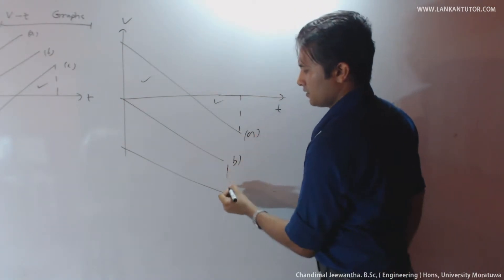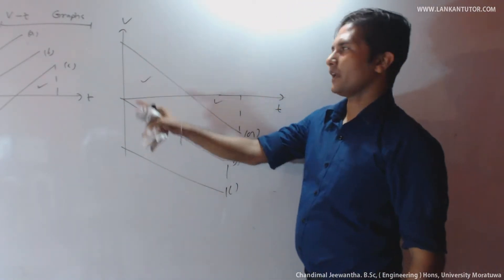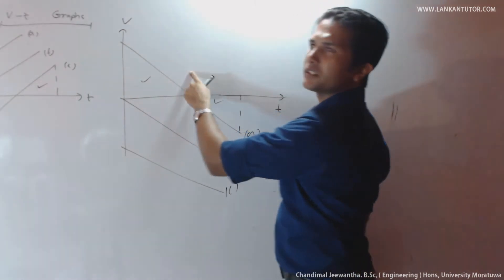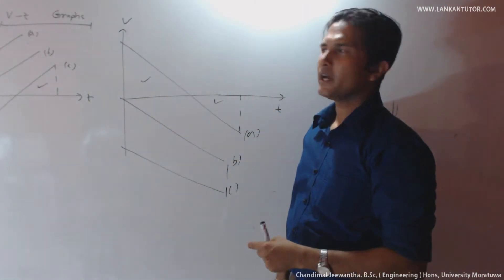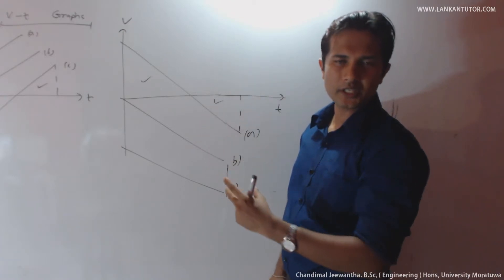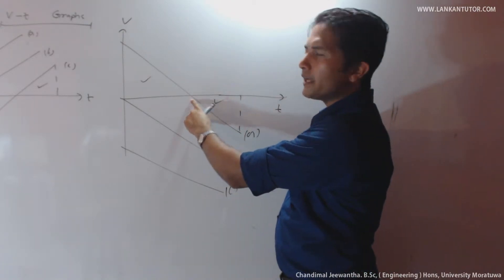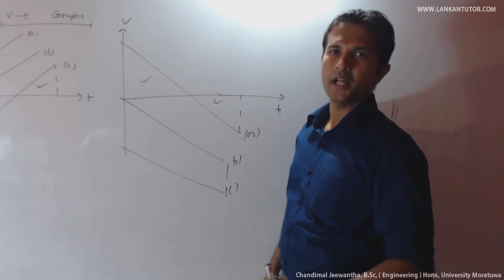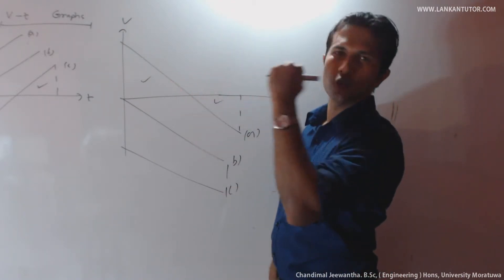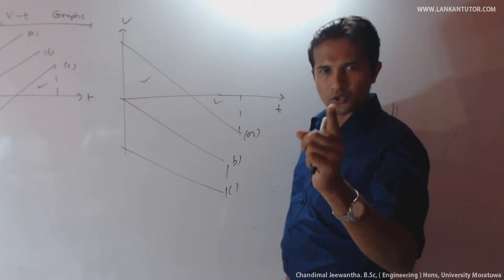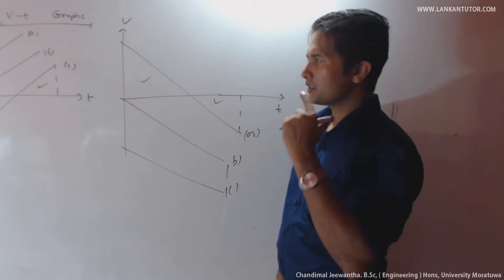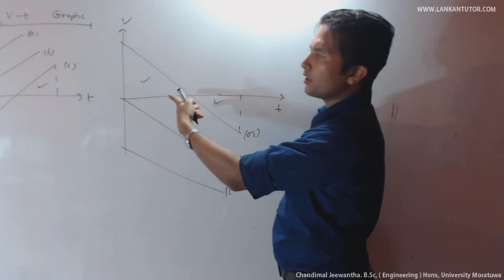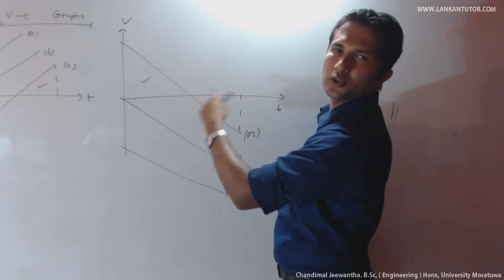Considering symbol A: there is positive velocity but it decreases — there is retardation towards the positive direction. It reaches zero velocity, meaning the object is at rest, then turns back and moves towards the negative direction with uniform acceleration. It passes the origin because the areas made by the two graph sections on the t-axis, top and bottom, are equal to each other.